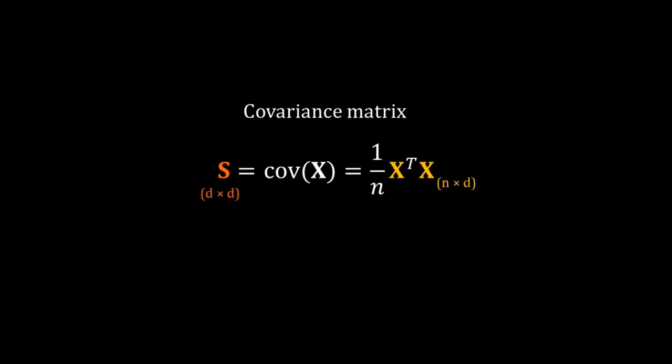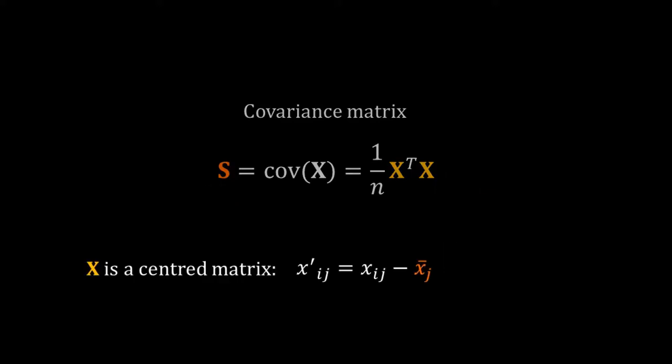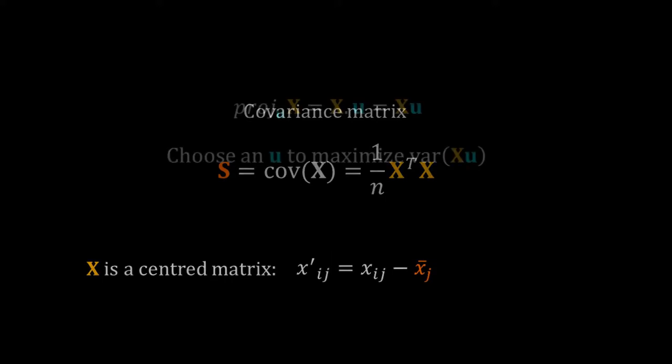Since X is an n by d matrix, the covariance matrix is a d by d square matrix, where d is the number of variables. It is also a symmetric matrix with variances on the diagonal and the off-diagonal elements are the covariances. Remember that we use a centered matrix to calculate the covariance matrix, so by default the data matrix X used in our PCA should be the centered data matrix.